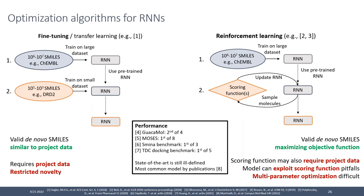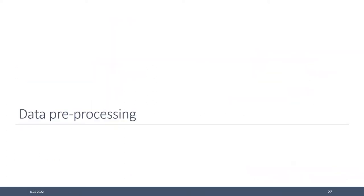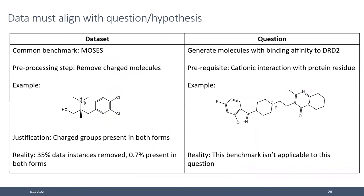Although RNNs are quite an old architecture, they're still very powerful in this domain — they always come first or second in benchmarks. A very recent benchmark compared them to much more recent, complex architectures with many more parameters, and RNNs still generally outperform. For data pre-processing, in this work I used a common benchmark dataset called MOSES.